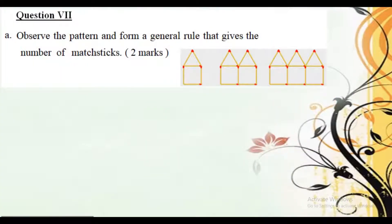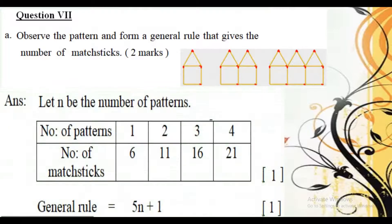The next question is also from patterns. We have to find the general rule for the given matchstick pattern. As explained earlier, consider n as the number of patterns and form the table. Formation of the table carries 1 mark, and identifying the general rule carries 1 mark, making this question worth 2 marks total.